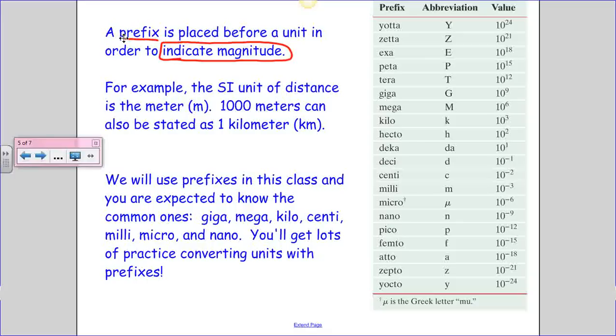So for example, the SI unit of distance is the meter. But if we have a thousand meters, we can also write that as one kilometer. A thousand meters and one kilometer are exactly the same measurement. If you were to take a measuring tape and measure a thousand meters and then measure one kilometer, they will be exactly the same. In this case, the word kilo tells us that there are a thousand meters. That's what kilo means. It means a thousand. So whenever you read one kilometer, it means one thousand meters.